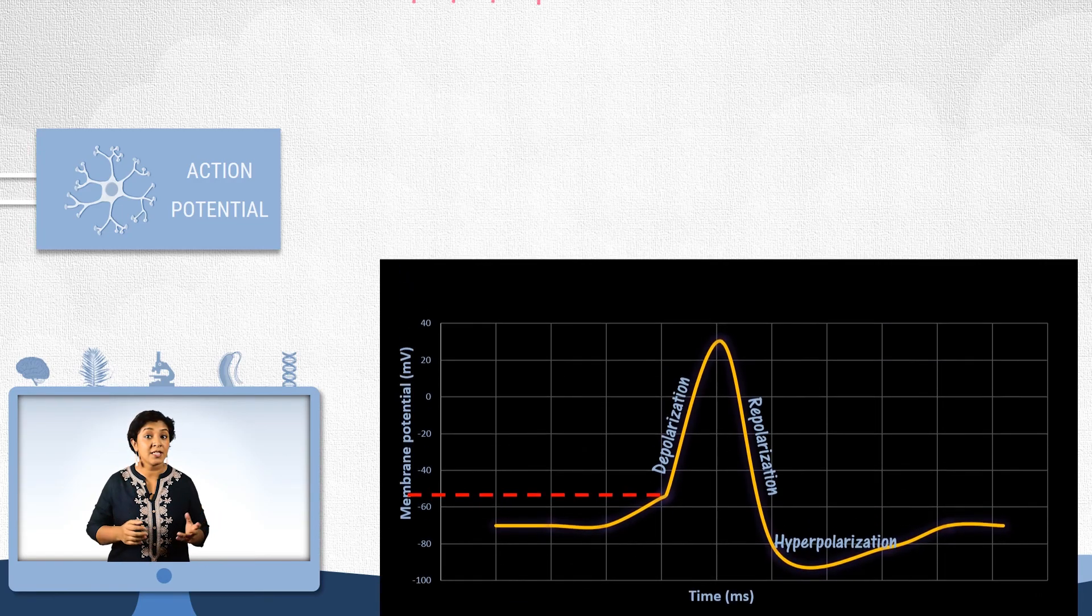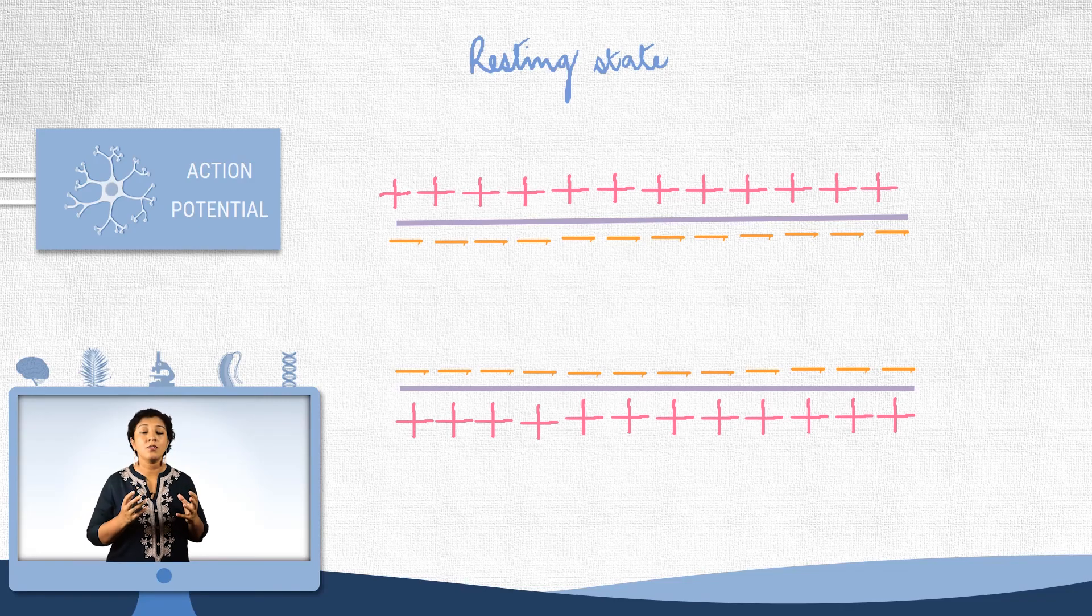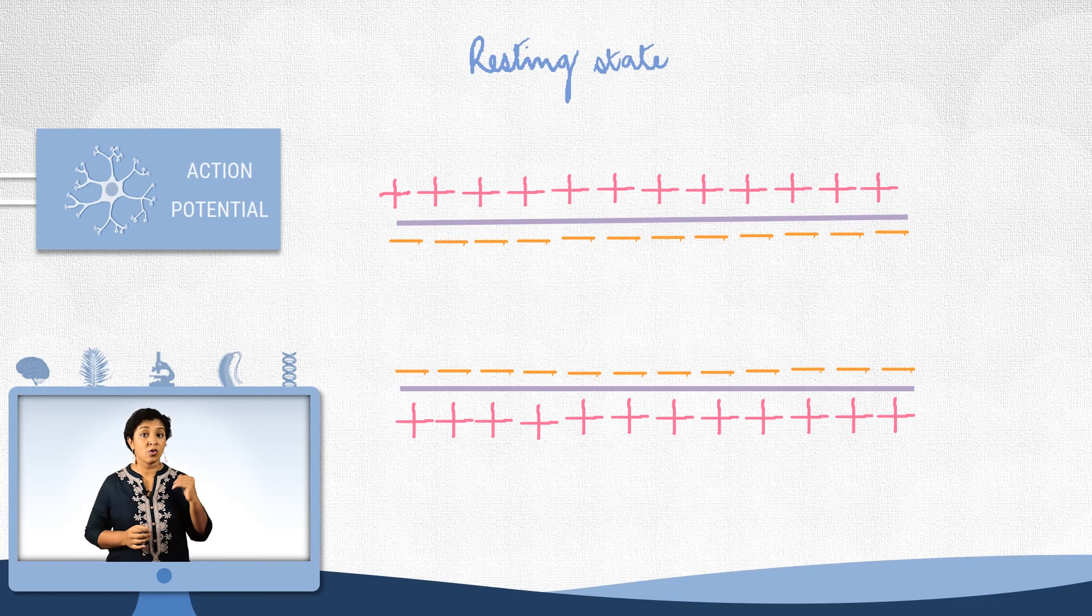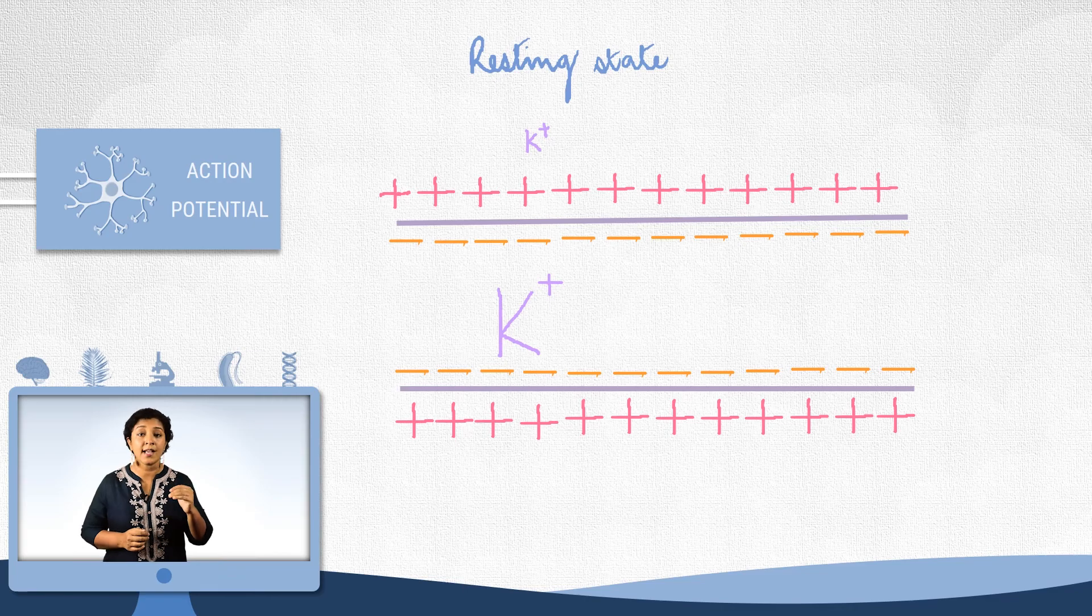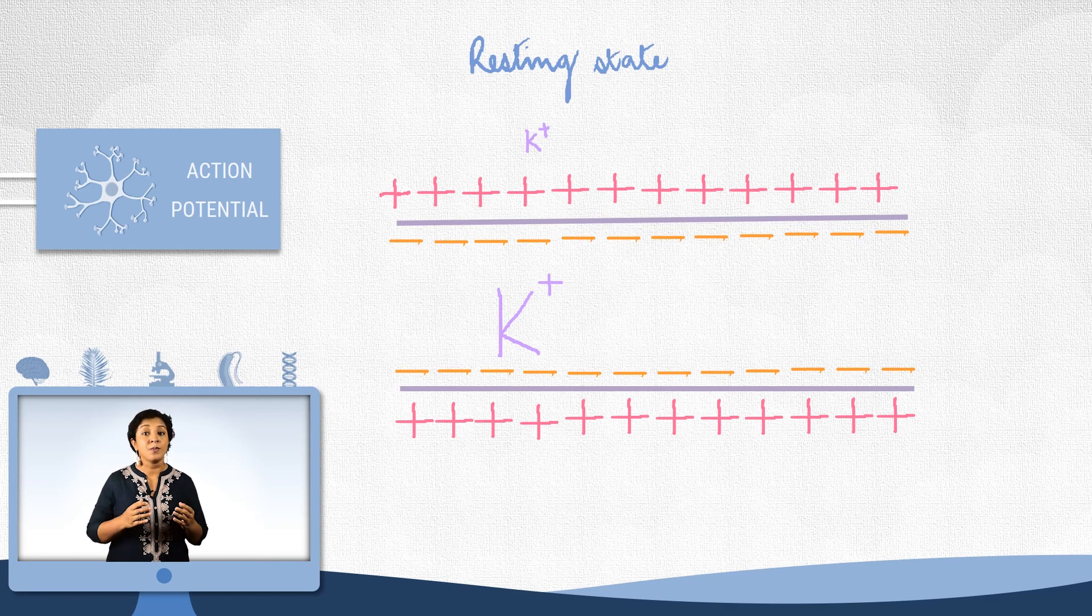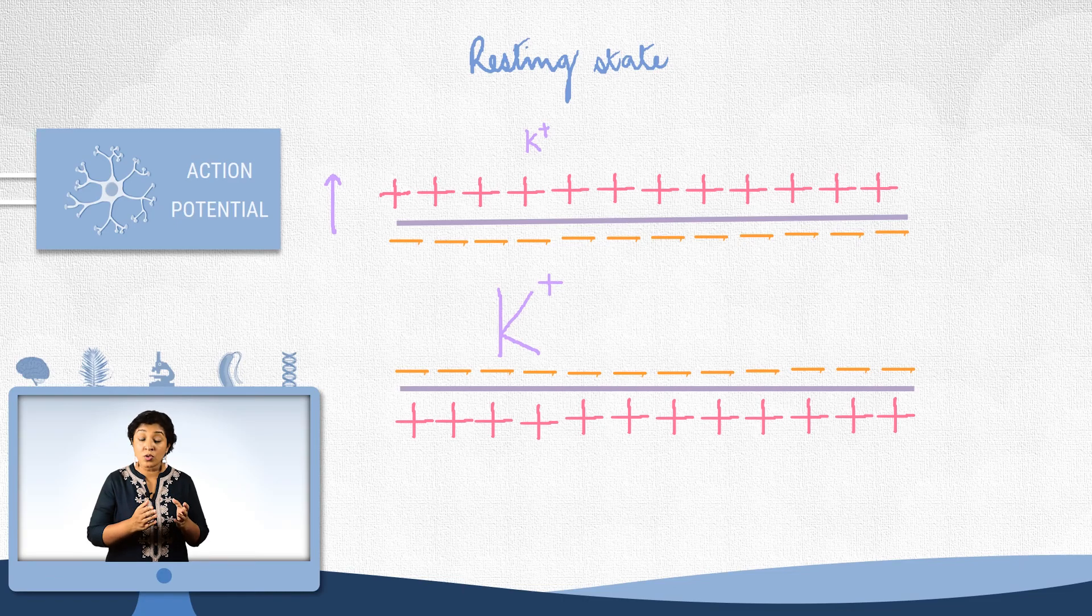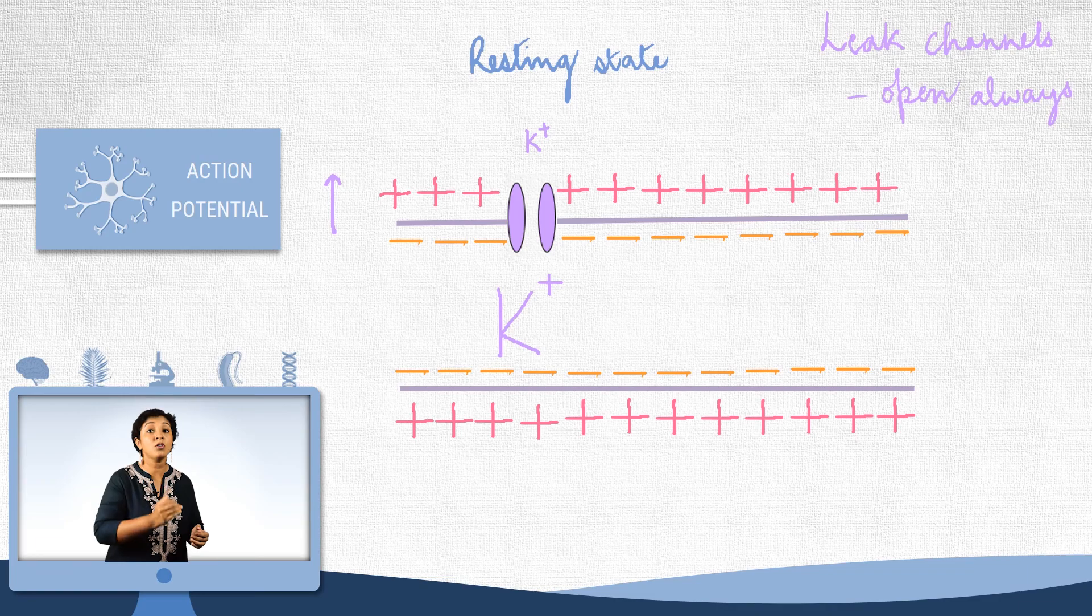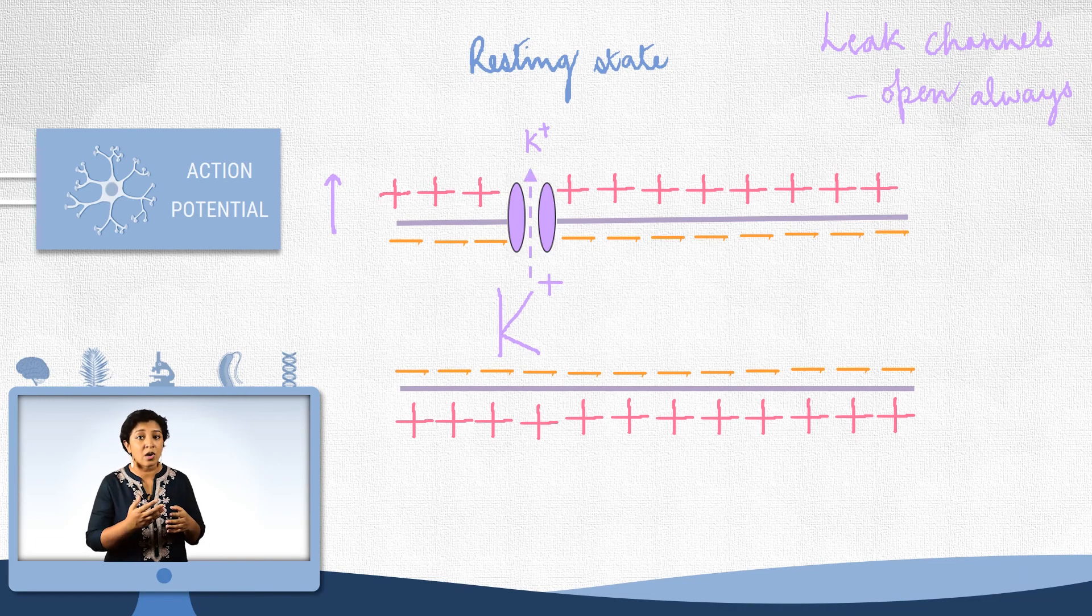Let's look at the axon segment again. First, what is happening in the resting state? As we have already discussed, in the resting state, potassium is high inside and low outside. Which means they would want to diffuse out. But they can do so only if there are ion channels. And yes, there are. These are called leak channels. That is, they are open all the time. So, potassium can easily diffuse out.